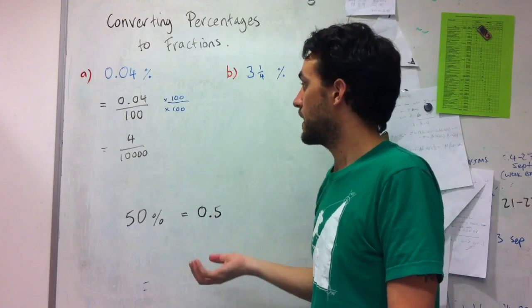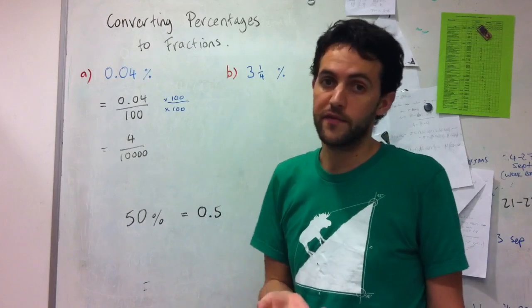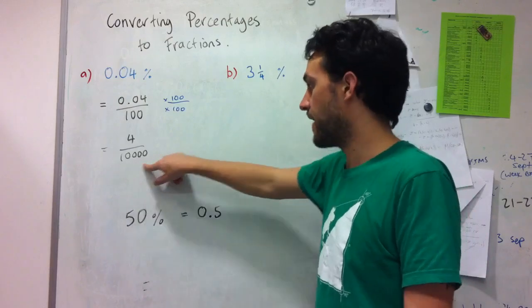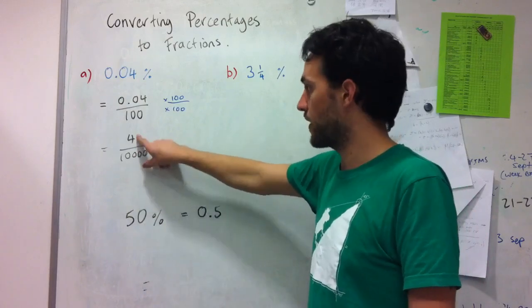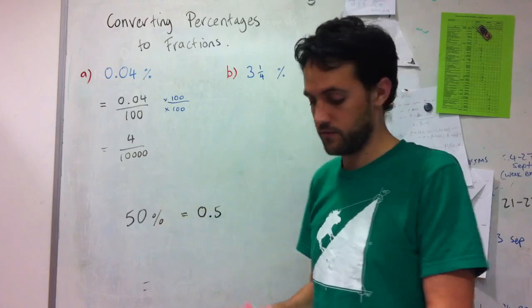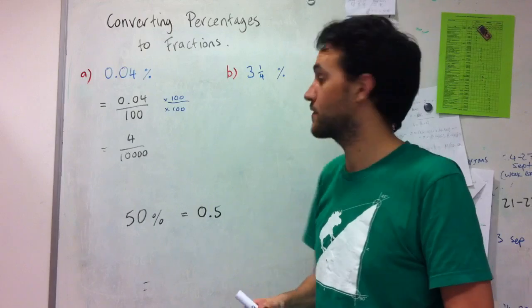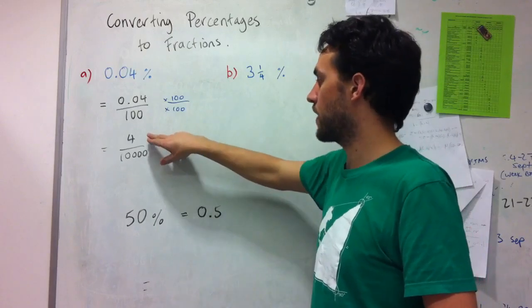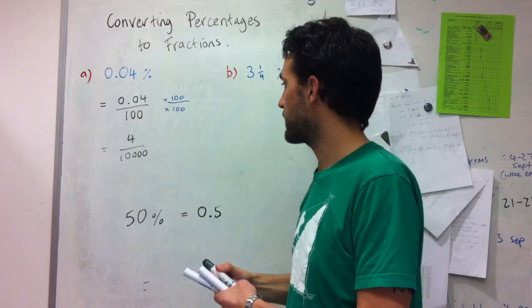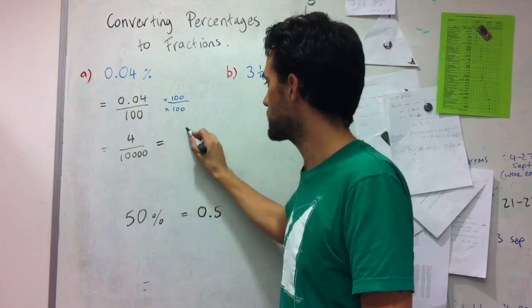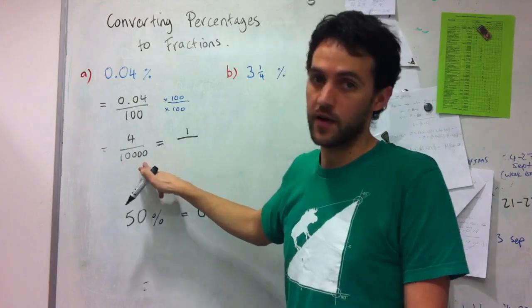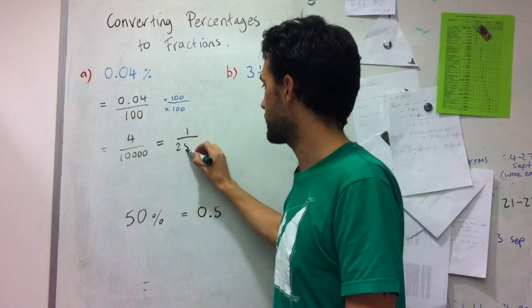And now all I need to do is find the highest common factor of these numbers so that I can express it in simplest form. Ten thousand is divisible by four because as you can see the last two digits are zero, so it passes the divisibility test for four. So if I just divide both the numerator and denominator here then I'll get the simplified form of my fraction which is one over, and here ten thousand divided by four gives me two thousand five hundred.